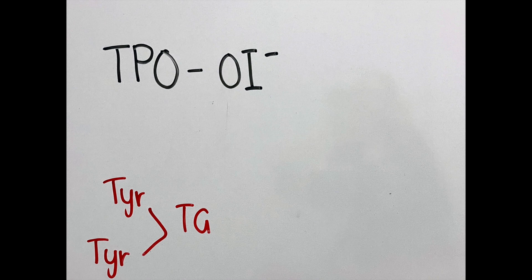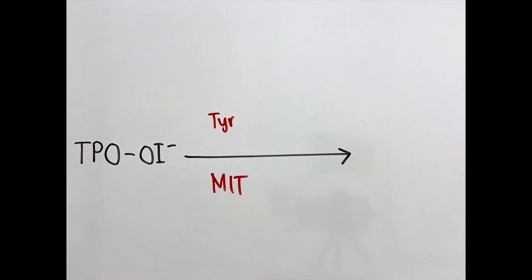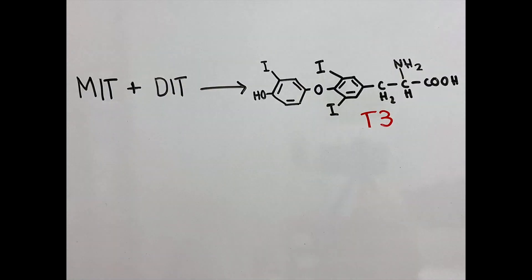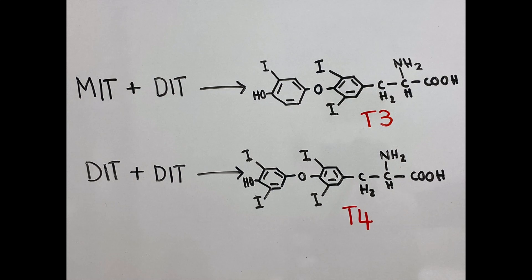The iodide binds to tyrosol residues coming off the thyroglobulin protein, or TG, to produce MIT (monoiodotyrosine) and DIT (diiodotyrosine). One MIT and one DIT molecule combine to form T3. Two DIT molecules combine to form T4.